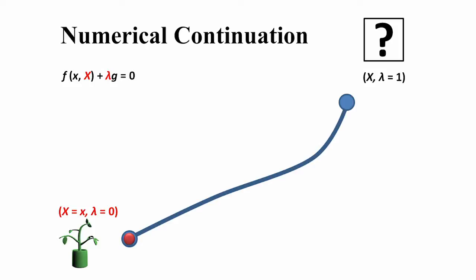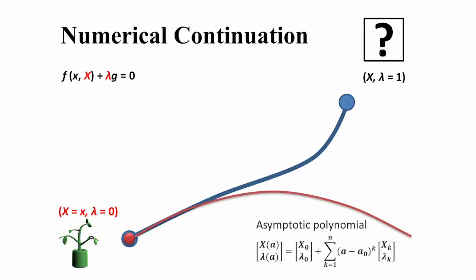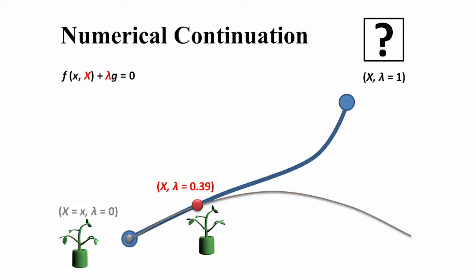At each point, we use an asymptotic polynomial expansion to locally represent the solution branch. Using the asymptotic expansion, we trace the solution branch as far as possible until the convergence radius is reached. We repeat this process until we obtain the desired rest shape.